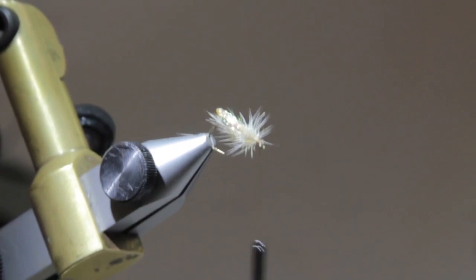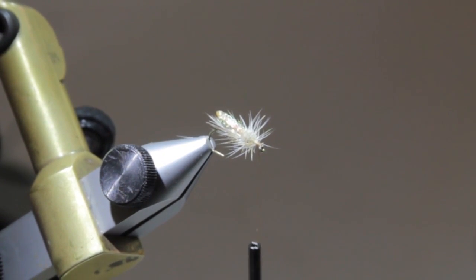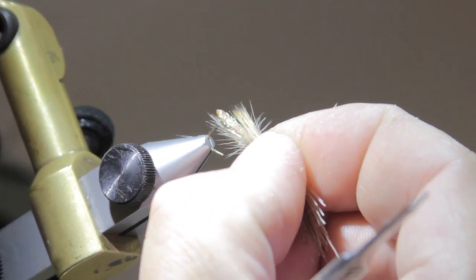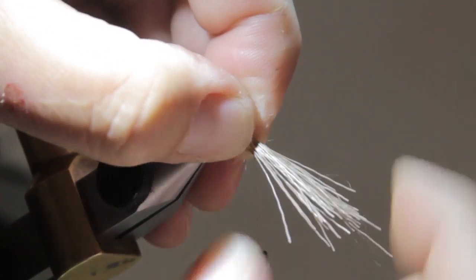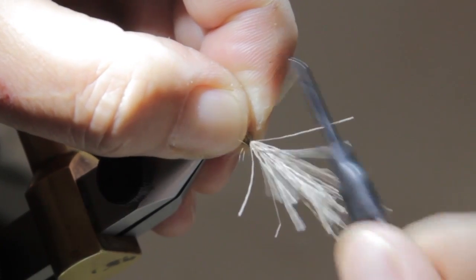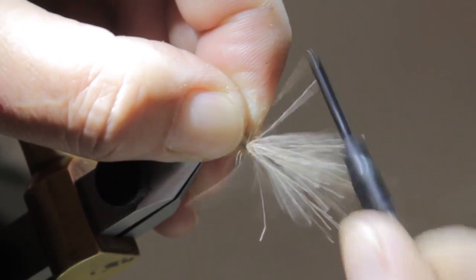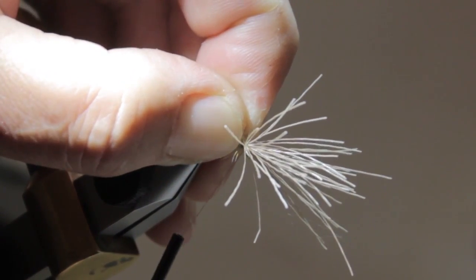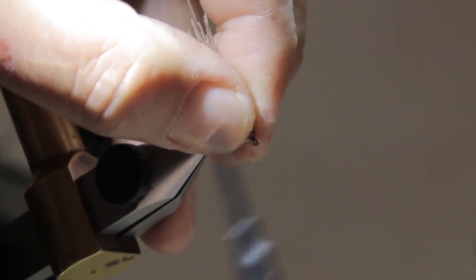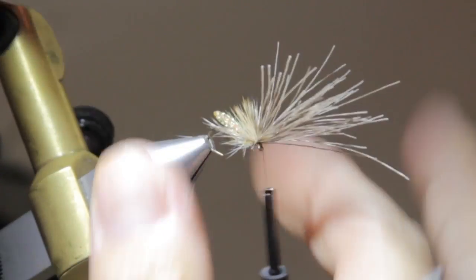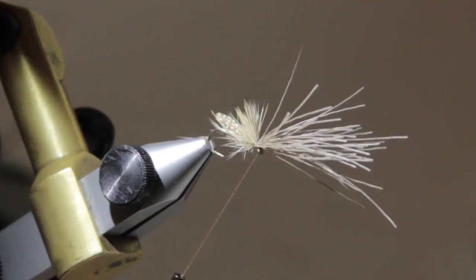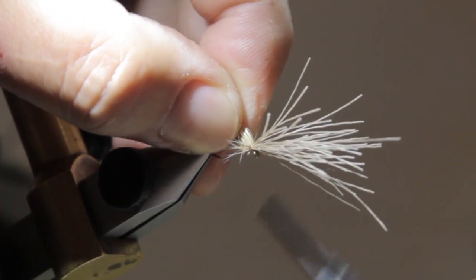Now we're going to add a little bit of a wing on this fly with some elk hair. Don't get too heavy with your elk hair. I'm going to tie in a short wing. A couple loose wraps, a couple tight wraps, snug it down, get your thread in front, make a couple more.